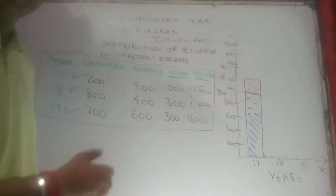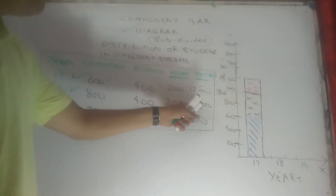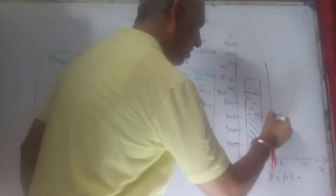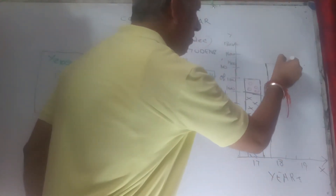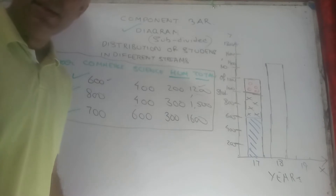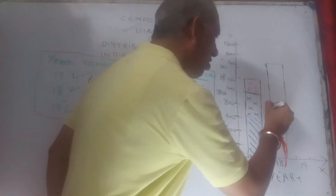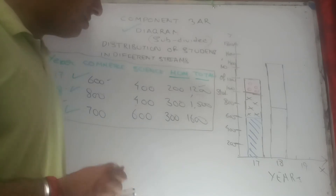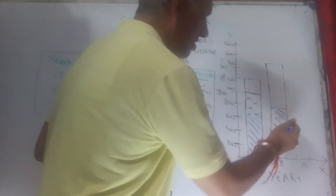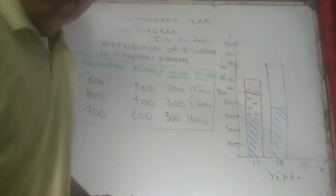Now let's move on to 2018. For 2018, what I am going to take is first the total. What is the total? 1500. So the total is 1500 — confirm it. And now find out the other values. 800 is the commerce segment, represented by the blue lines. So I'll draw the blue lines representing the commerce one. That makes us immediately compare that in the current year, commerce students are more in comparison to the last year — if you just check to the left.